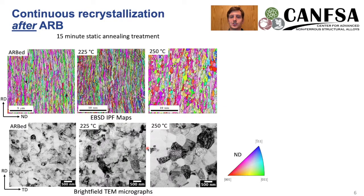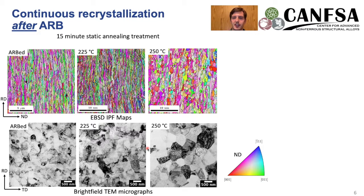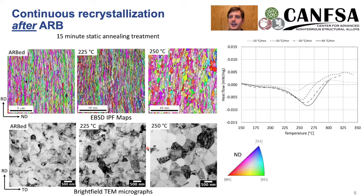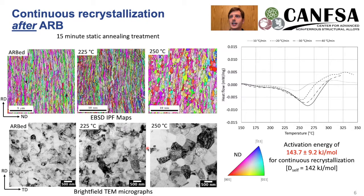We have found that short static annealing heat treatments can actually transform this microstructure into a more equiaxed grain structure. We see this in EBSD inverse pole figure maps as well as bright field TEM micrographs, where dislocation structures recover and go through continuous recrystallization to lead to near equiaxed, very clear grain boundaries. We've also complemented this with differential scanning calorimetry and found that this transformation is characterized by the self-diffusion of aluminum. This gives us our third requirement: near equiaxed grains.